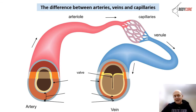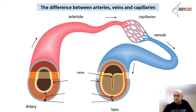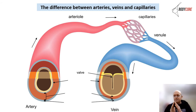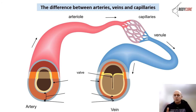Veins work differently from arteries — they're not under as much pressure. Arteries are under high pressure, while veins operate under moderate to low pressure. Veins work via a series of chambers and valves. Blood comes up through a contraction, moves into the chamber, and the valve snaps shut to prevent backflow. Then we move into the next chamber and the valve opens to allow blood through, snapping shut again when blood tries to go back.